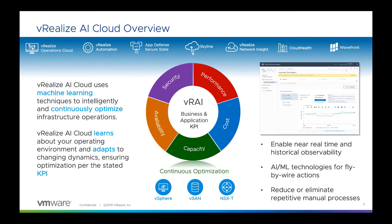vRealize AI cloud uses machine learning techniques to intelligently and continuously optimize your infrastructure. It's going to be optimizing your vSAN clusters for better performance for your application workloads. It does continuous learning about your operating environment and adapts to all the changing dynamics and application requirements, ensuring optimization per the stated KPIs — such as improved read and write throughput or reduced network latency on your VMware software-defined data center.